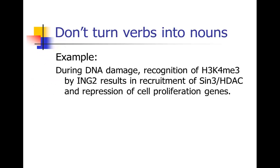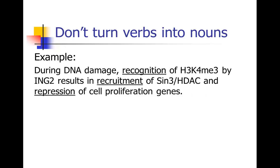Here's an example sentence: 'During DNA damage, recognition of protein 1 by protein 2 results in recruitment of protein 3 and repression of cell proliferation genes.' Notice that we have a lot of nouns here: recognition, recruitment, and repression. Those are all nouns that could have been verbs — recognize, recruit, and repress. We saw this also with a lot of examples last week. So we're going to turn some of those nouns back into verbs, and when you do that, it's actually going to force you to get rid of some ambiguities that often crop up when you write with a lot of nouns.